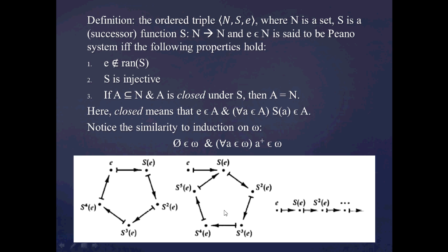Furthermore, a system where s(e) serves as the output for two different inputs would not be a Peano system, because s is not injective. So the second postulate rules out things that look like that.